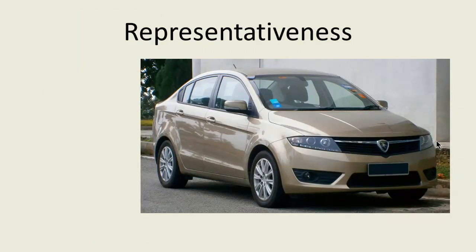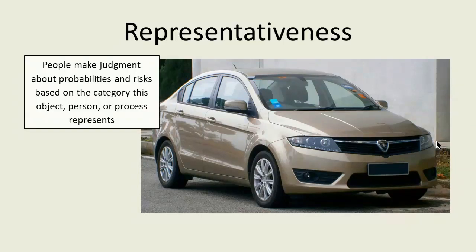Here is a nice-looking car. What brand is it? Where is it produced? Is it a Mazda, Toyota, or Kia? In fact, it is a Proton, designed in Malaysia and assembled in Bangladesh. You probably don't associate very nice-looking and well-built cars with Malaysian-designed or Bangladeshi production. People make judgments about probabilities and risks based on the category this object, person, or process represents. This heuristic is called representativeness and leads to stereotypes and wrong decisions. In project management, it limits our ability to process new information, including evaluating new ideas and identifying risks.